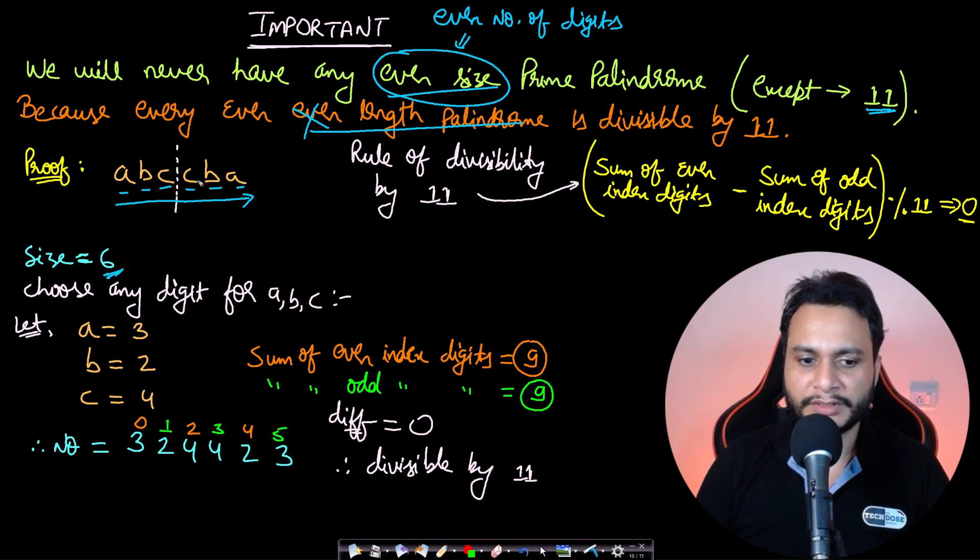This constitutes and makes sure the given integer is a palindrome. This is of size 6 and we're free to choose any values for these three digits abc. Let's pick a equals 3, b equals 2, and c equals 4. Once you form this number, we should know the rule for checking divisibility of 11. The sum of even index digits minus the sum of odd index digits—if it's divisible by 11, then the number will be divisible by 11.